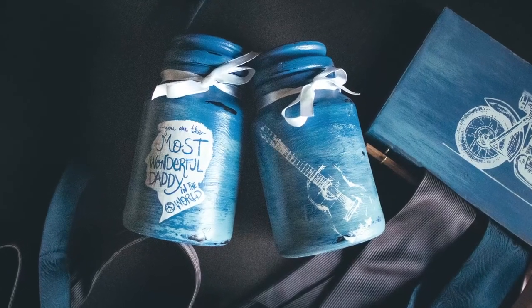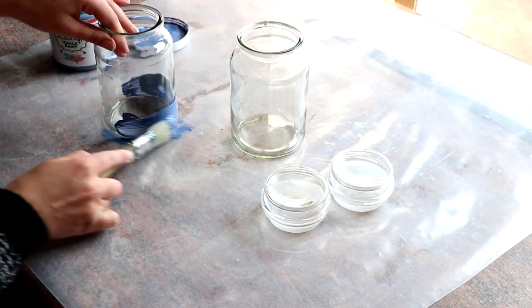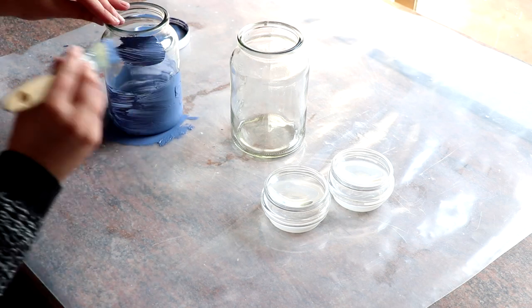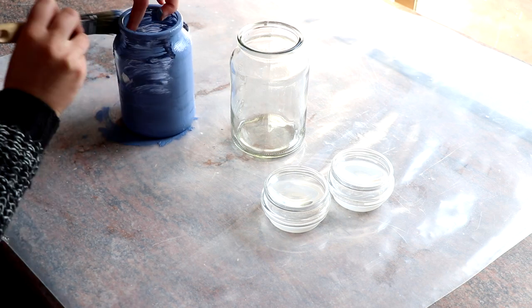Then I decided to make some craft projects for Father's Day as well. The first crafty project was to take some old jars and upcycle them. I painted my jars with the blue thunder chalk paint from Chalky Craft and let them dry. Then paint a second and third layer.